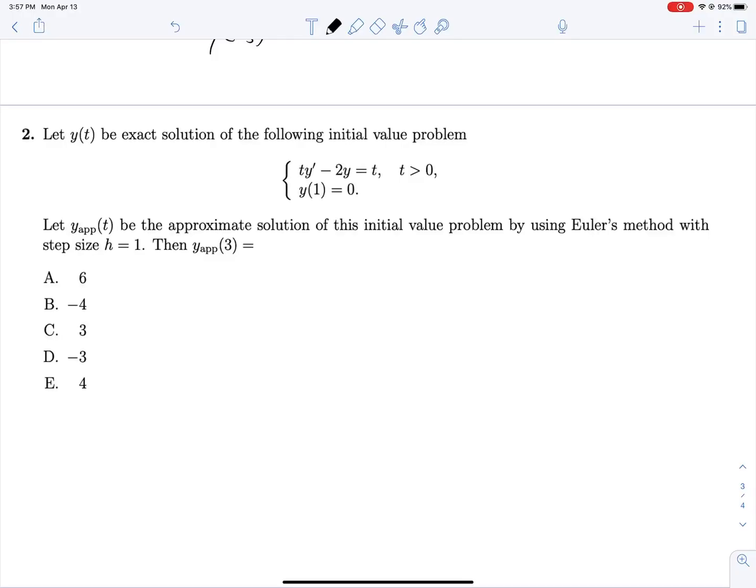And finally, we're told that y of t is the exact solution to this initial value problem, and that the y approximate of t is the approximate solution of this initial value problem found by using Euler's method with a step size of h equals 1. We know that y at 1 is equal to 0, so we're approximating y at 2.